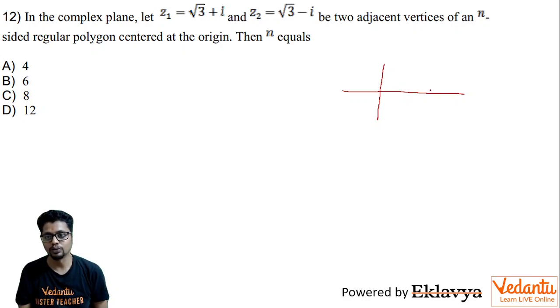So here, root 3 plus iota will be somewhere here, root 3 comma 1 I may mark it as. And root 3 minus iota would be somewhere here, root 3 minus 1 I can mark it as.